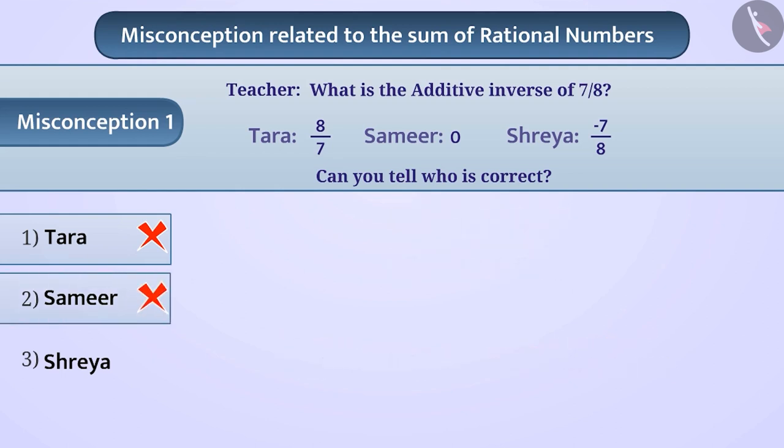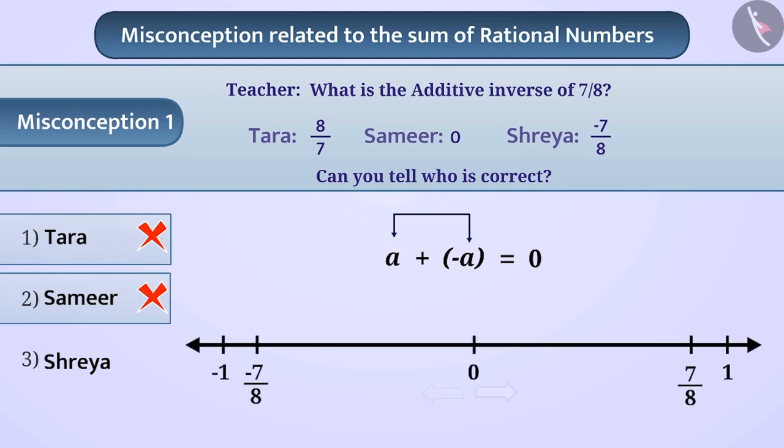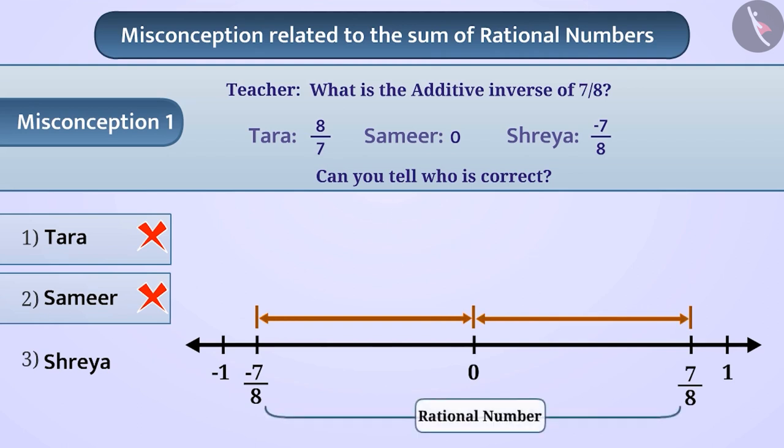If the sum of any two rational numbers is 0, then they are called additive inverse of each other. Or we can also say that if two rational numbers are equally spaced in opposite directions from 0, then they are additive inverse of each other.